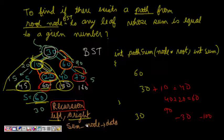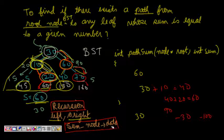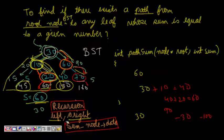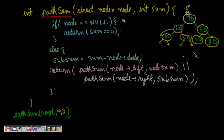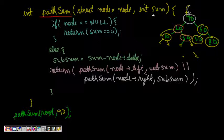So it's basically recursion: every time we subtract the node data from the sum and travel both the left and right subtrees to find, at a leaf node, whether the sum has reached 0. Our function is: int pathSum(struct node* node, int sum), where we pass the root first and it calls itself recursively, and sum is the target sum to find from root to leaf.